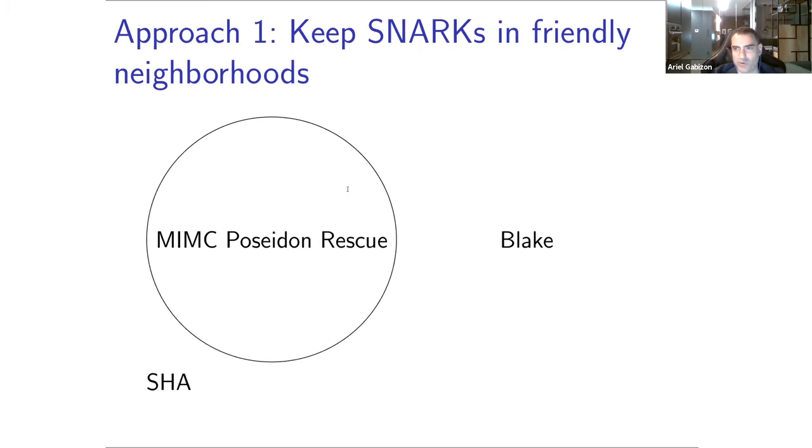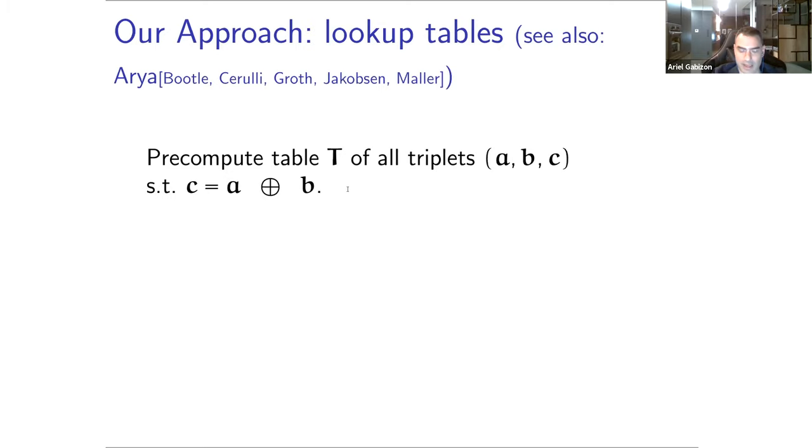This has led to one bridge line of investigation in the last few years of keeping SNARKs in friendly neighborhoods. This is research on how can we construct good hash functions, good ciphers such that all or almost all the operations are native field operations. In this line of research we've got the MiMC, the Poseidon and Rescue hash functions. The idea is, maybe we can whenever we need a hash function or a cipher, we'll use something in this neighborhood.